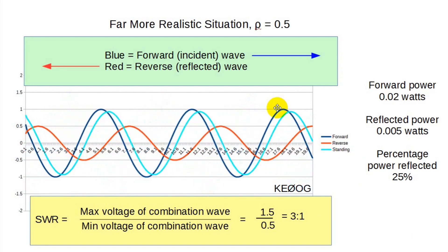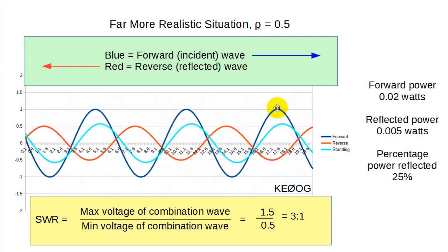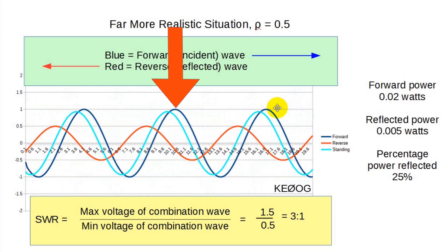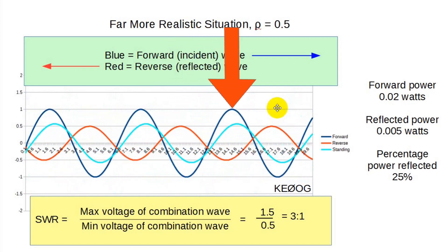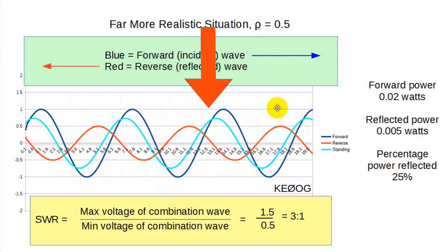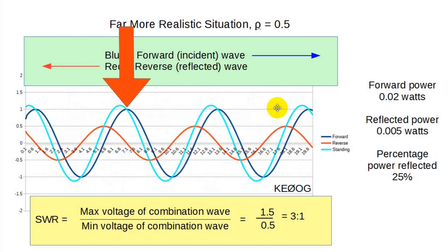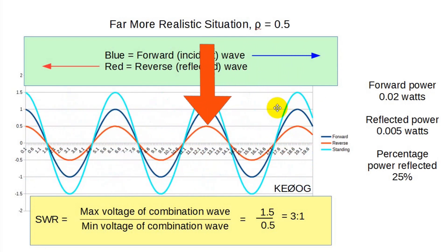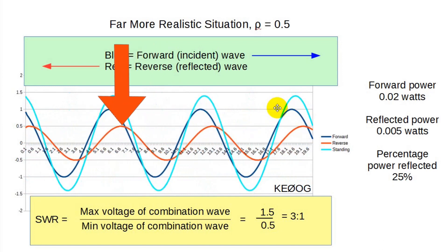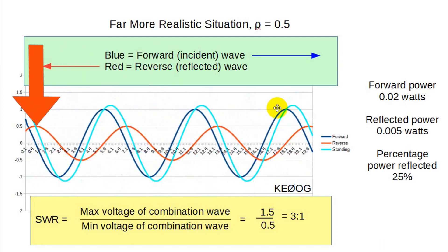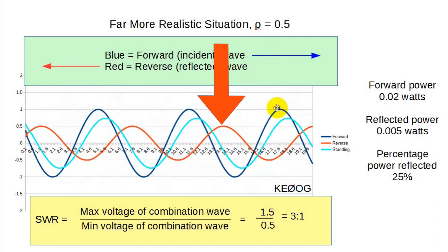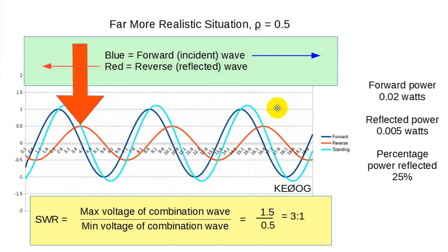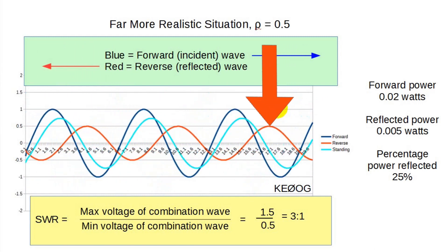I created this animation to show a much more common scenario. The dark blue waveform is the forward or incident voltage waveform going from the transmitter on the left to the antenna on the right, as shown by the red arrow that follows along. Its peak value is one volt. The red wave is the voltage of the reflected wave traveling from the antenna input back toward the transmitter, as shown by the red arrow. The value is one half that of the incident wave, or a half volt in this case. Thus, the reflection coefficient is 0.5, or one half.